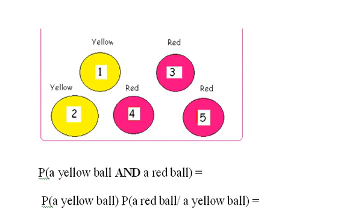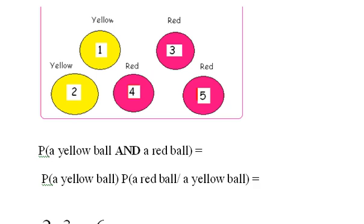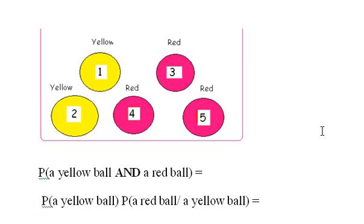These events may not be independent because when you pull one ball out, things have changed. That is, the sample space has changed.